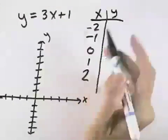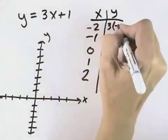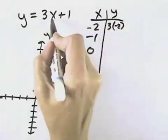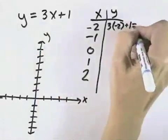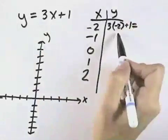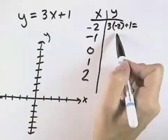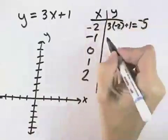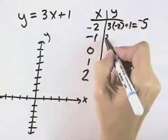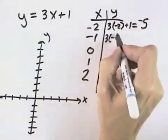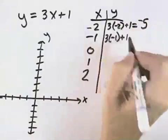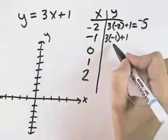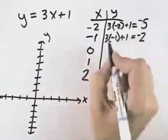So when x equals negative 2, we'd have y equals 3 times negative 2, substituting the negative 2 in, plus 1. 3 times negative 2 is negative 6, plus 1 is negative 5. Then with negative 1, we'd have 3 times negative 1 plus 1, again substituting negative 1 in for x. Negative 3 plus 1 is negative 2.